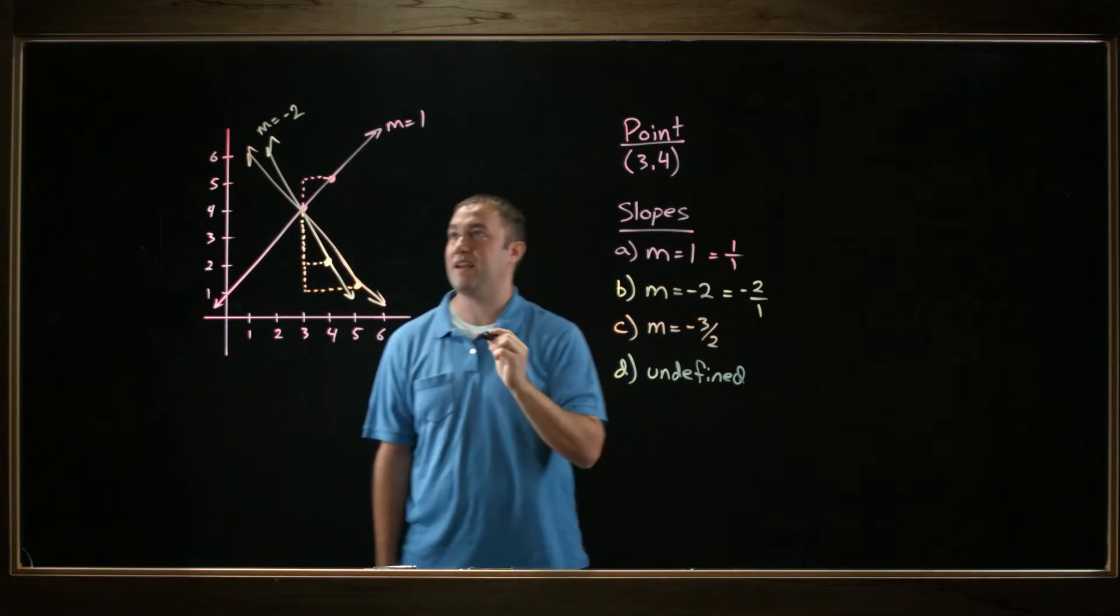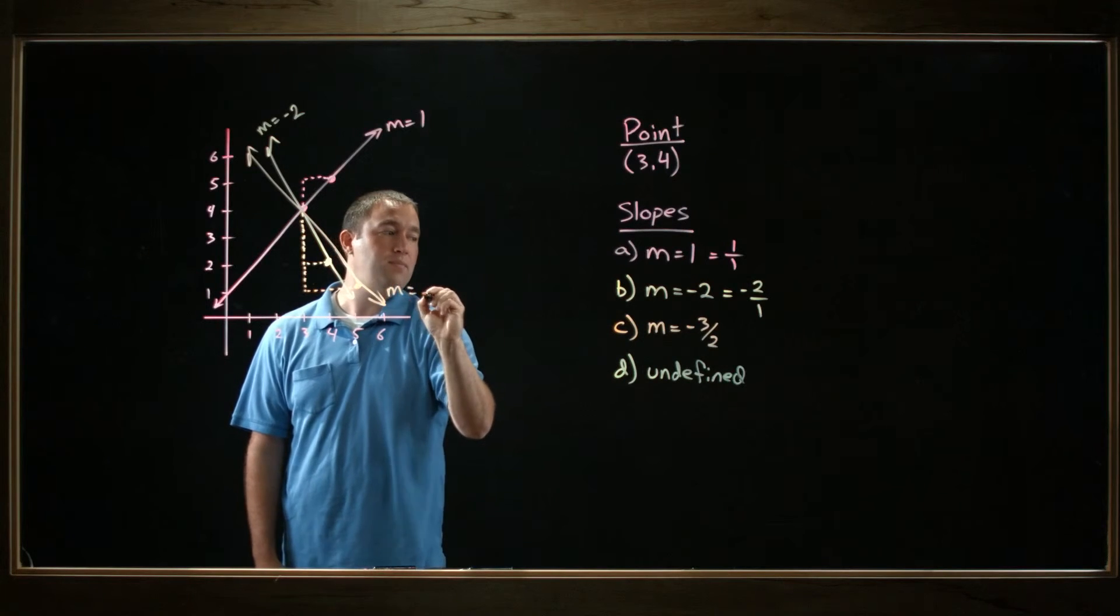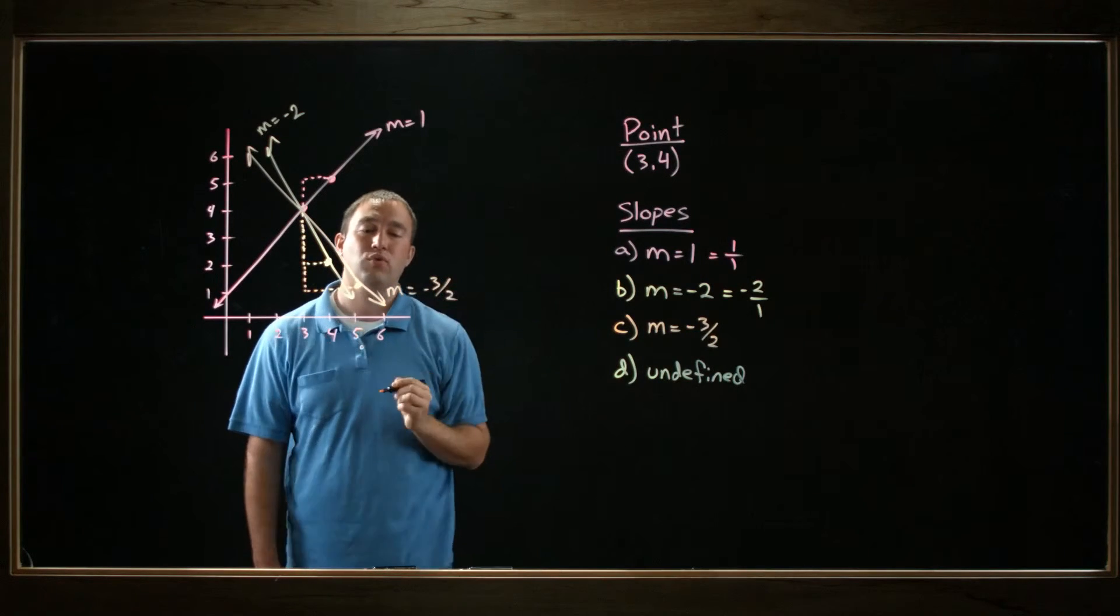That's OK. That's supposed to be a straight line. This is m equals negative 3 halves.